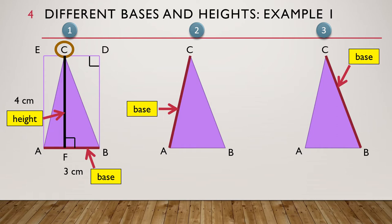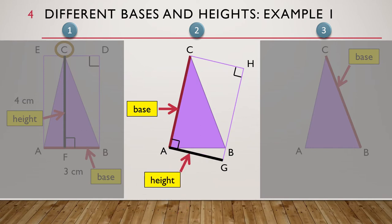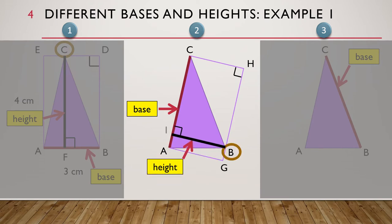We have already seen the first case. Let's look at the second case. Here, AC is the base. We can draw the related rectangle from the base. The base AC is the common side shared by the triangle and the related rectangle. In this case, the height is GA — it is perpendicular to the base. We can move the height so that it starts from B, which is the vertex away from the base AC, and goes all the way down to the base. So, BI is also the height of triangle ABC.